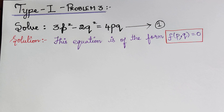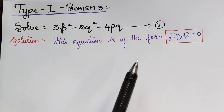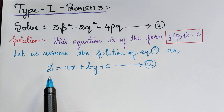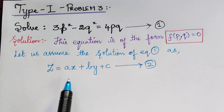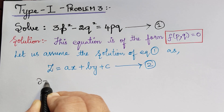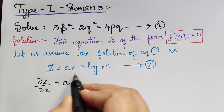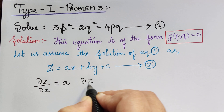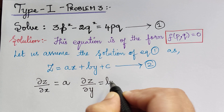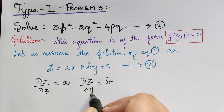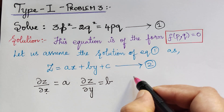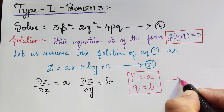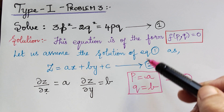The next step is to assume the solution of equation 1 as z = ax + by + c. Let us mark this assumed solution as equation 2. When we differentiate partially with respect to x and y, we get dou z/dou x = a and dou z/dou y = b. Since dou z/dou x = p and dou z/dou y = q, we have p = a and q = b. Mark this as equation 3.